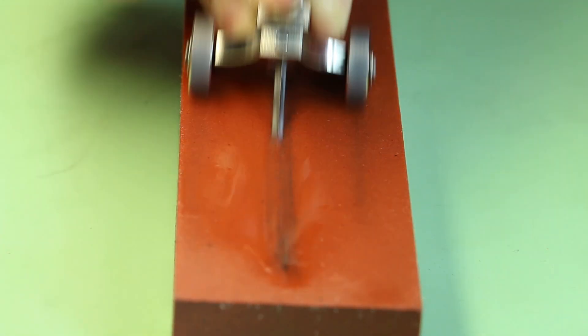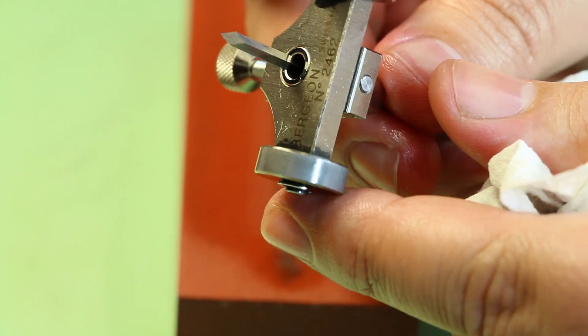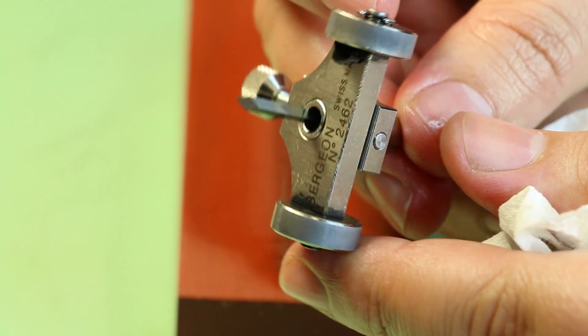And put a bit of oil. Sharpening the graver on the fine side of the stone won't take as long as it did on the medium side of the stone because you're not introduced to a new angle. So here, check it again. It's looking very nice.